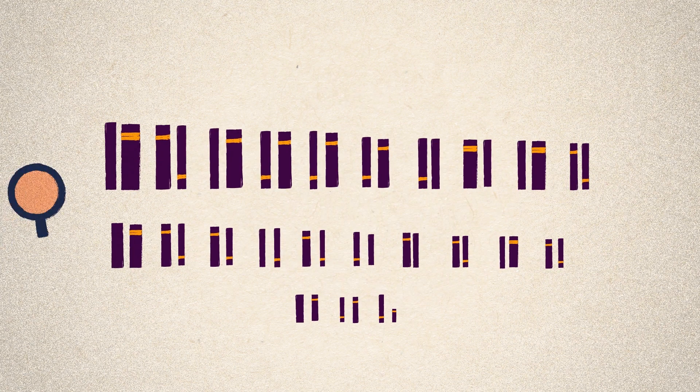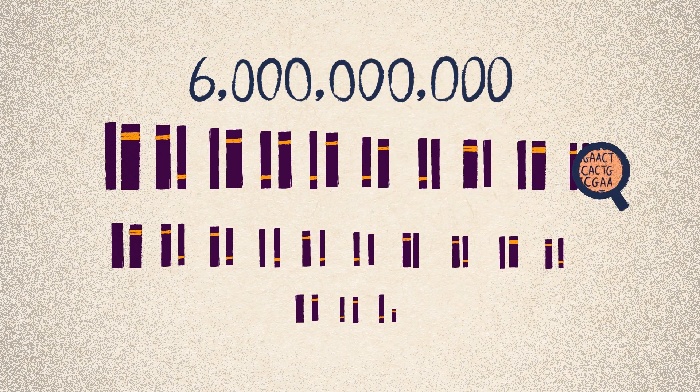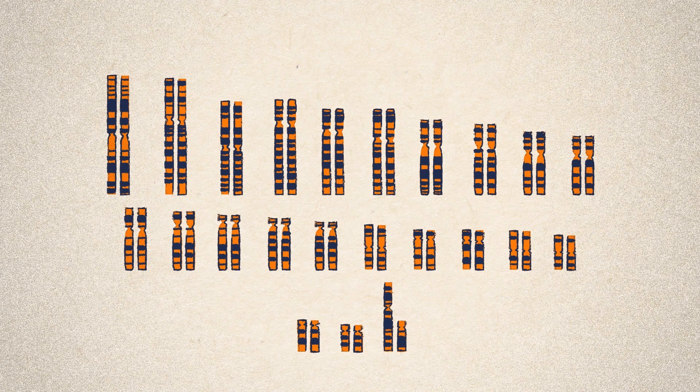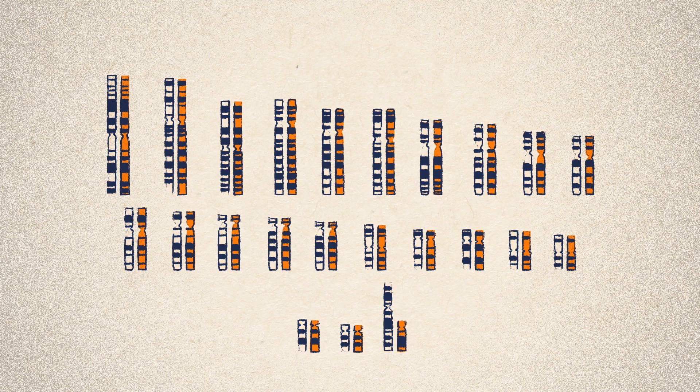Our human genetic instructions crammed into our cells are made up of more than 6,000 million DNA letters that are divided across 46 chromosomes that we inherit from our parents, 23 from our mother and 23 from our father.